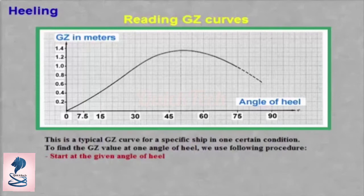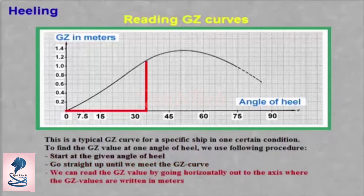Start at the given angle of heel. Go straight up until we meet the GZ curve. We can read the GZ value by going horizontally out to the axis where the GZ values are written in meters.